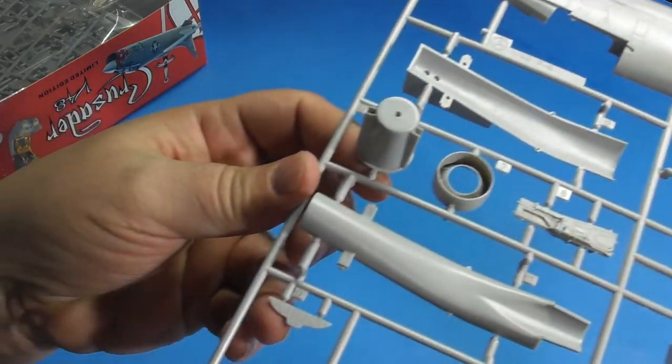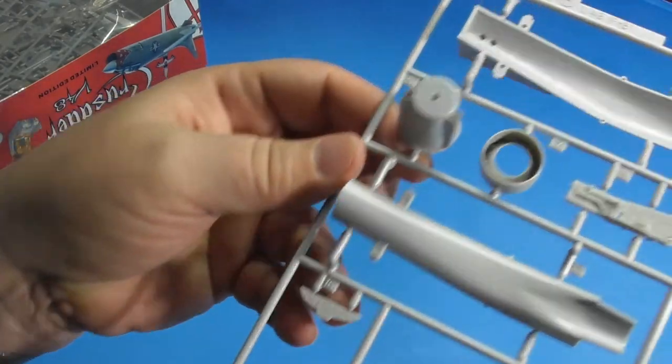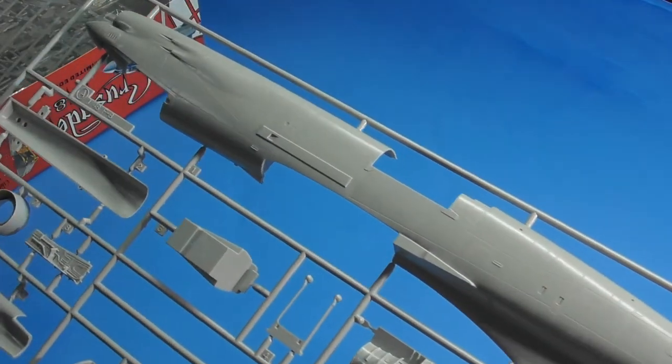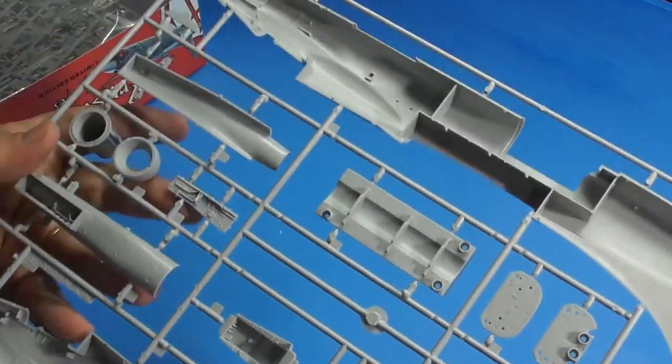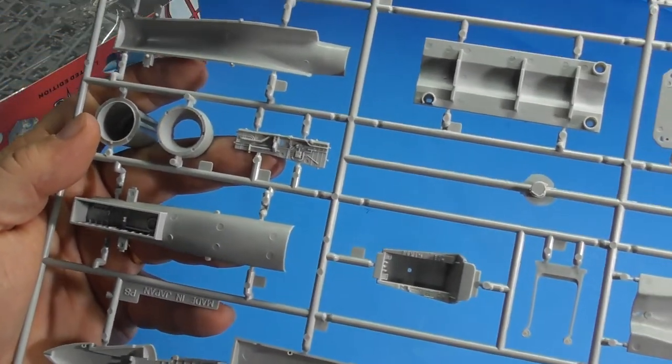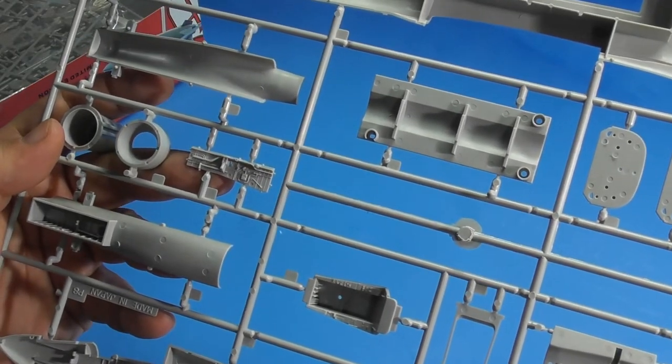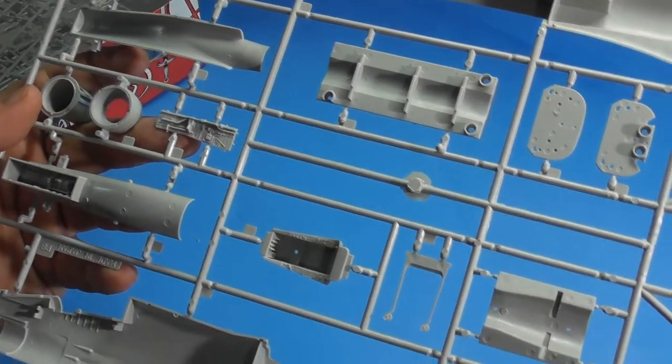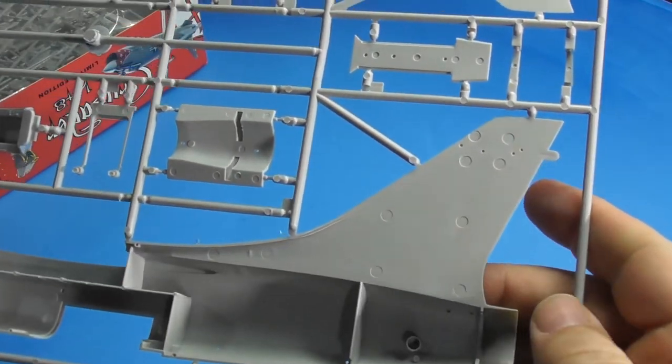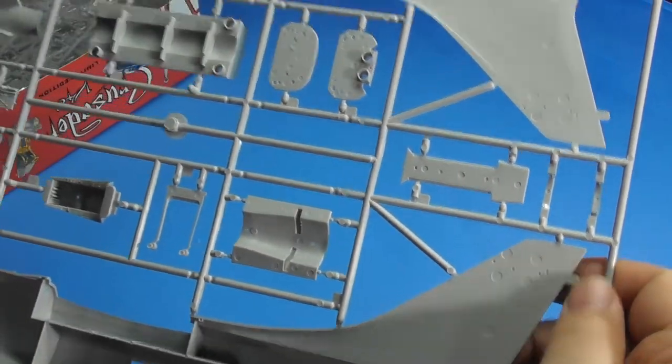As you can see, recessed panel lines are good all the way around. I'm thinking that's part of the cockpit. But no sink marks. No damaged sprues. No ejector pin marks. Where the cockpit goes, of course, in here.